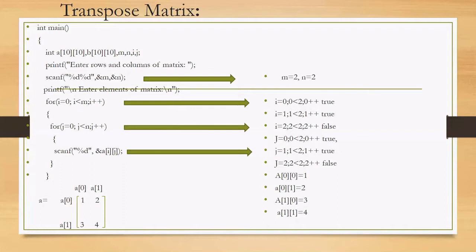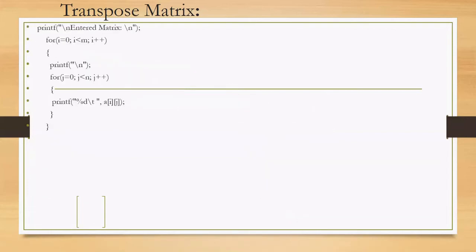The input matrix 'a' now has: a[0][0]=1, a[0][1]=2, a[1][0]=3, a[1][1]=4. So the first row is {1, 2} and the second row is {3, 4}. The job is to transpose this — {1, 2} becomes the first column and {3, 4} becomes the second column in the output matrix 'b'.